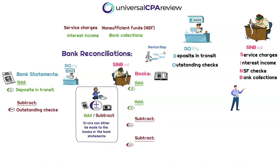Now let's take a look at the adjustments that need to be made to the book side of this reconciliation. When you're at the Prometric Center, remember that Dottie has only two items impacting the bank statements — the D and the O. For the book side, think about Sinbad. Specifically, focus on the first four letters of his name. This list is made up of service charges, interest income, non-sufficient funds — sometimes called NSF checks — and bank collections.